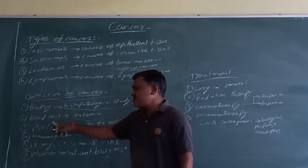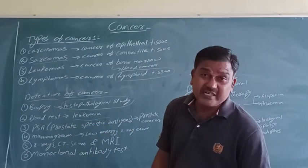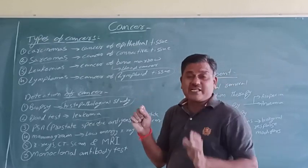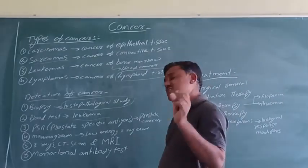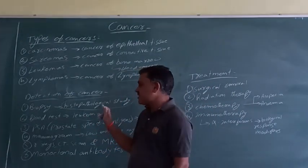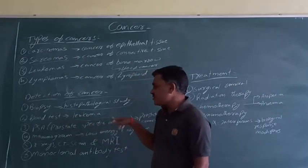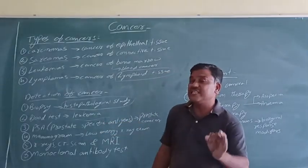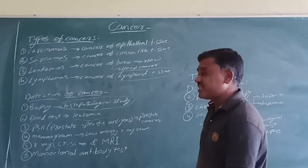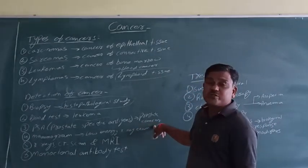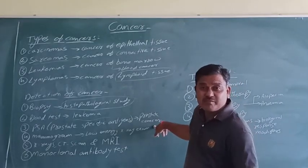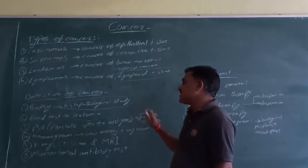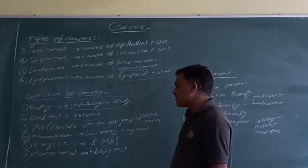For leukemia, detection and diagnosis occur by blood test. If we go for a blood test, we check how much WBC count should be there; if it increases, we observe the structure of the WBC. Then there is the PSA test — Prostate-Specific Antigen test. This test is used for identification of prostate cancer. The prostate gland is present in the reproductive system. If there is occurrence of that cancer, the prostate-specific antigen test is used for identification of prostate cancer.